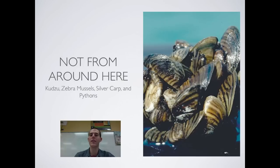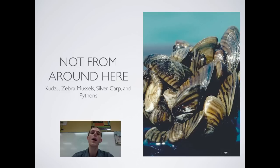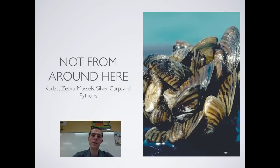Some major invasive species examples include kudzu — a vine native to Japan that was brought to America, particularly the southeast, as an ornamental plant. Farmers were encouraged to plant it to prevent erosion on their fields. However, kudzu is very well adapted to the southeastern United States environment and can grow up to a foot a day. It grows up and over trees and kills them, grows over wildflowers, blocks sunlight, takes resources, and kills off those plants.